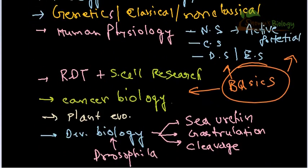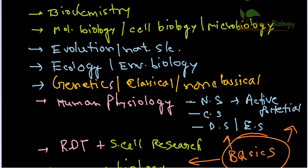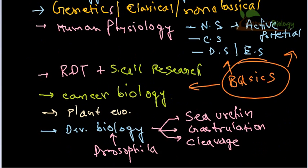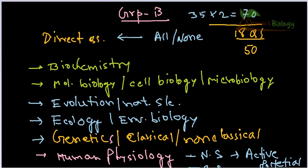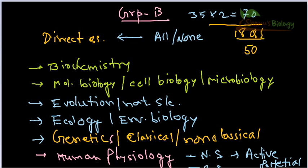To summarize: the most important topics are biochemistry, molecular biology, cell biology, evolution, ecology, genetics, human physiology, recombinant DNA technology, cancer biology, plant evolution, and developmental biology — for both Group B and Group C. For Group C, questions are analytical rather than direct-answer type. For Group B, you need to remember terminologies, and just confirming 18 correct answers out of 50 will get you JRF. Good luck!